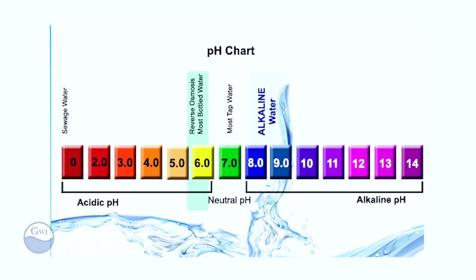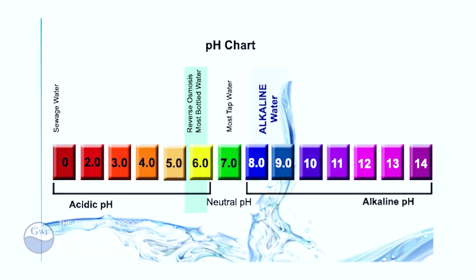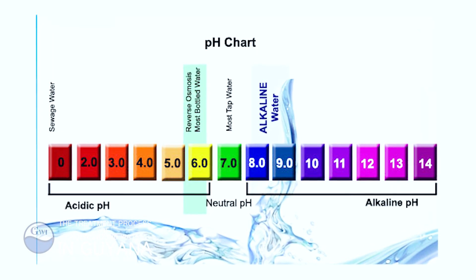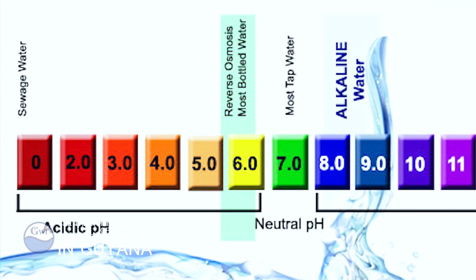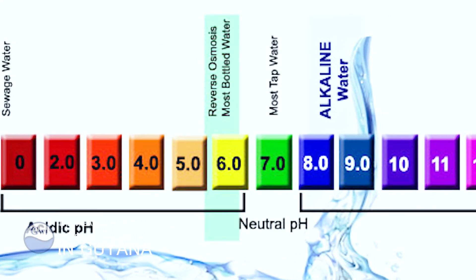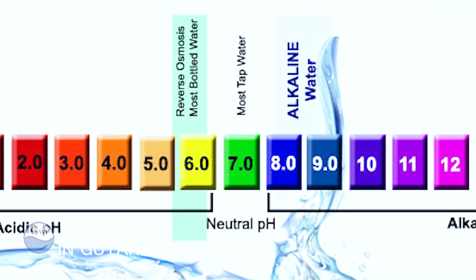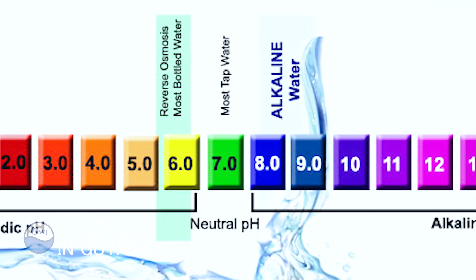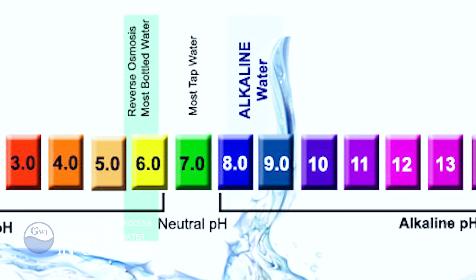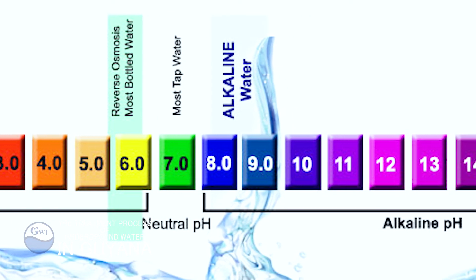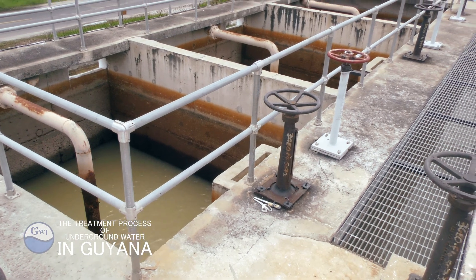pH represents how acidic or basic the water is. Below seven is considered acidic and above seven is considered basic; seven is neutral. If the pH is too low, calcium hydroxide, popularly known as lime, can be added proportionally to raise the pH.